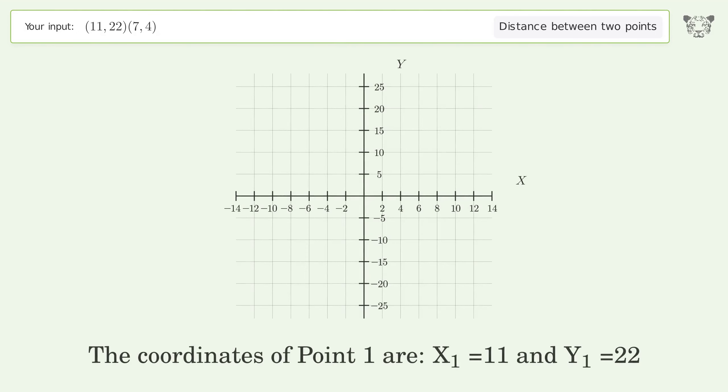The coordinates of point 1 are x₁ equals 11 and y₁ equals 22. The coordinates of point 2 are x₂ equals 7 and y₂ equals 4.